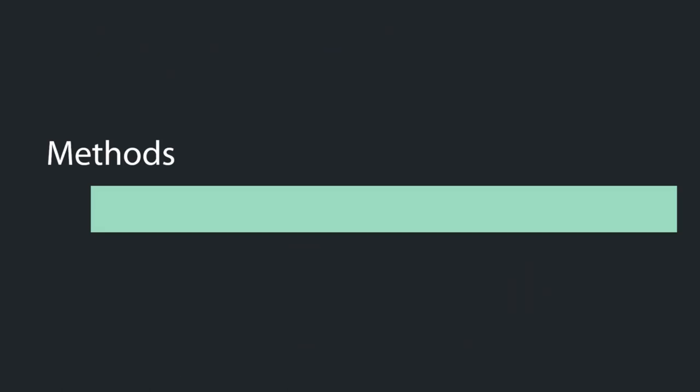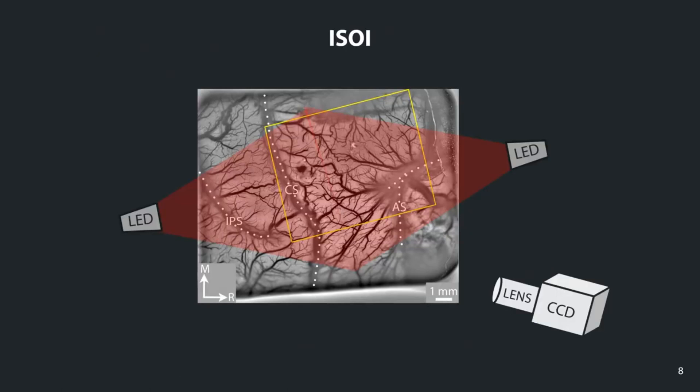Briefly, the methods: we are using intrinsic signal optical imaging, which shines red light on cortex that has been exposed via craniotomy and durotomy. We record the intrinsic signal change using a CCD camera capturing frames at 10 Hz. Due to their extinction coefficients at red light wavelengths, deoxyhemoglobin will absorb more red light than oxyhemoglobin, meaning that an increase in deoxyhemoglobin — an indicator of neural activity — will read as darker pixels in the frames.